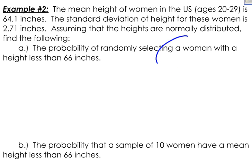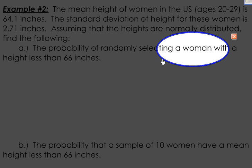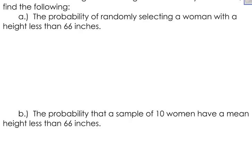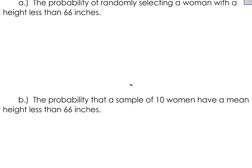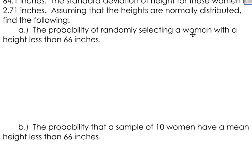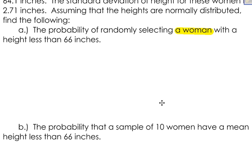I want to focus in on this — I am looking at one woman. I want to know the probability of randomly selecting a single woman with a height less than 66 inches. Now in part B, it says find the probability that a sample of 10 women will have a mean height that is less than 66 inches. There's a big difference between these two questions. In part A, I am just looking at a single woman. But in part B, I am looking at a sample of 10 women.